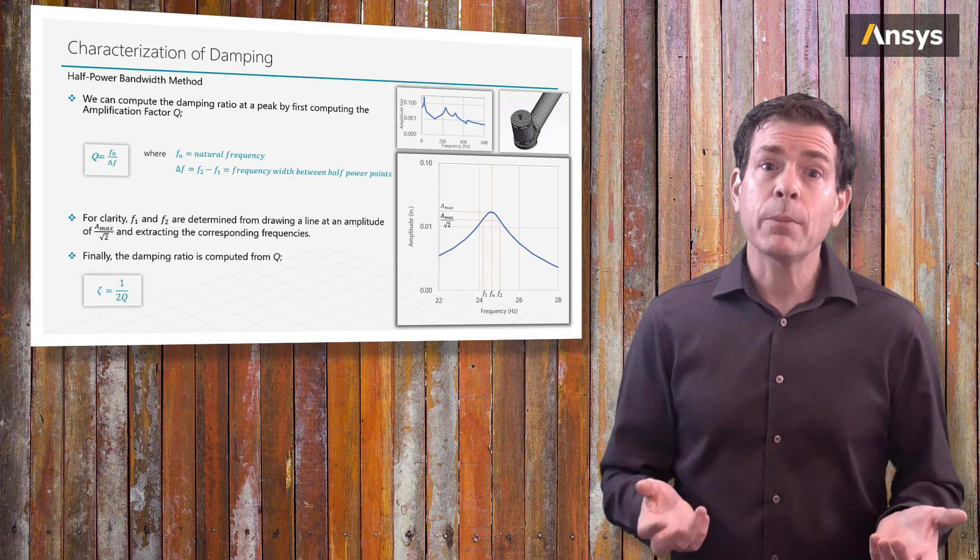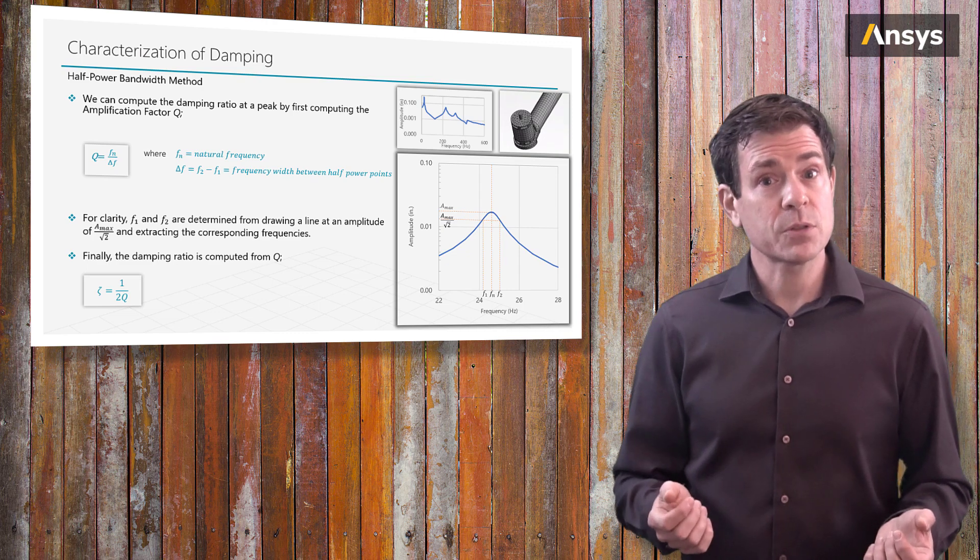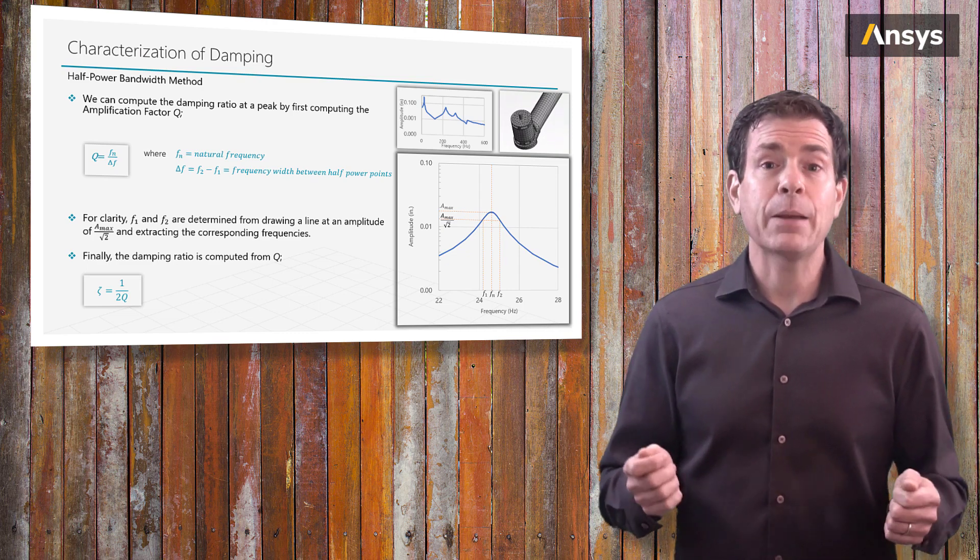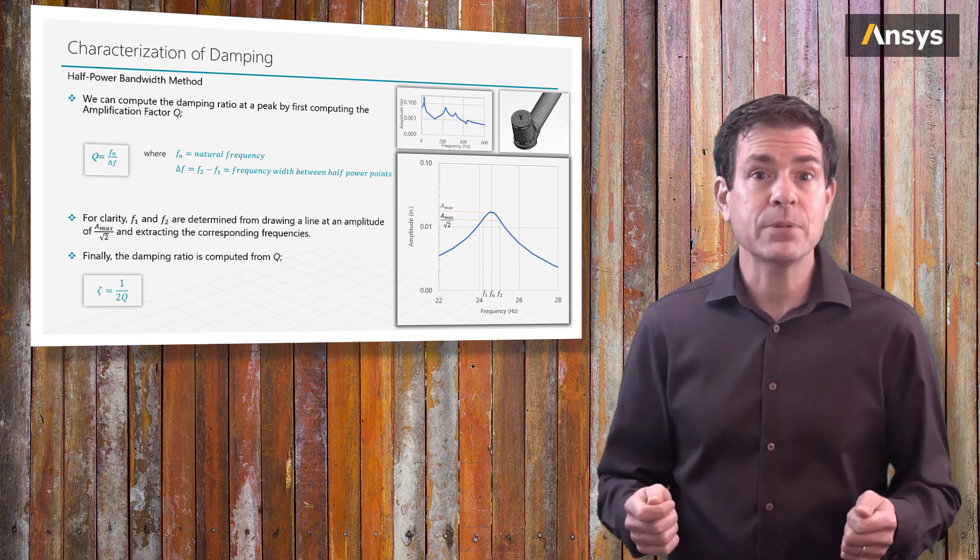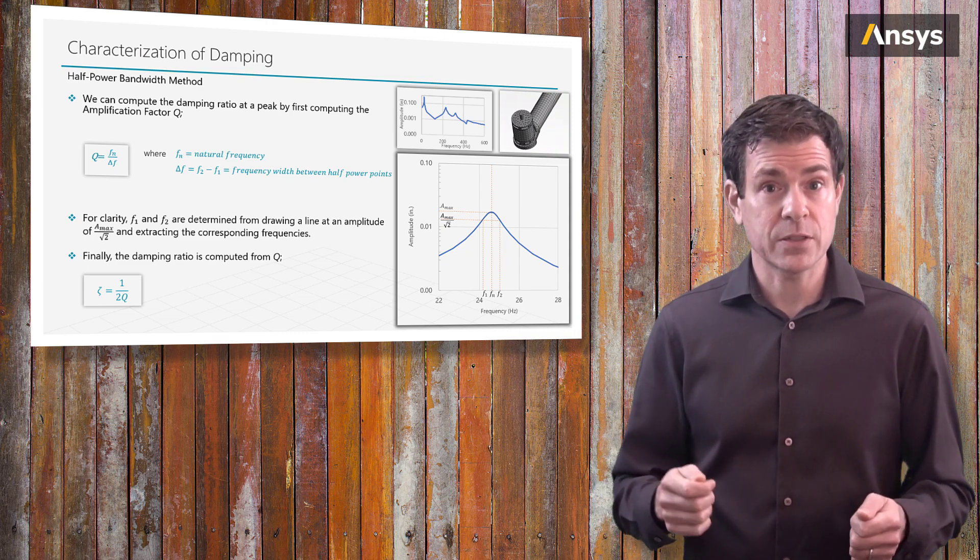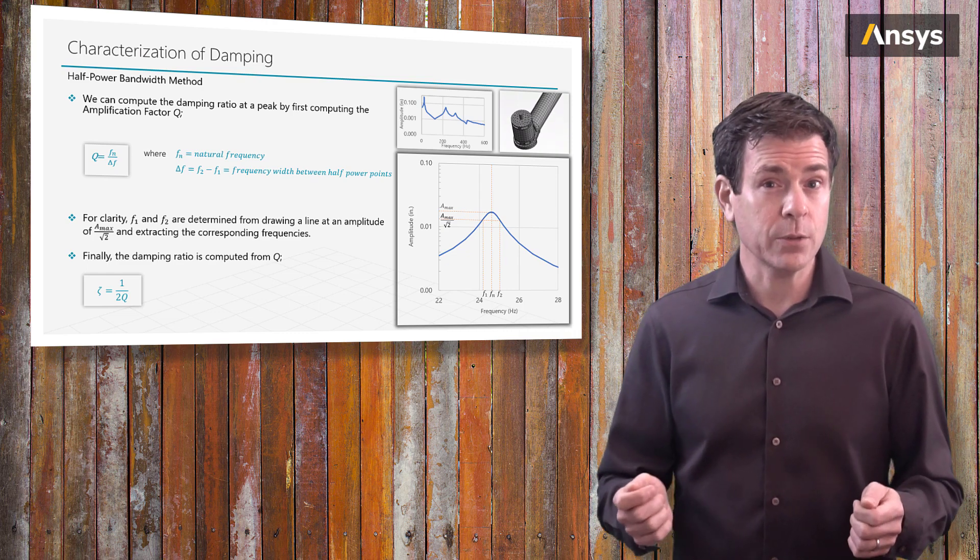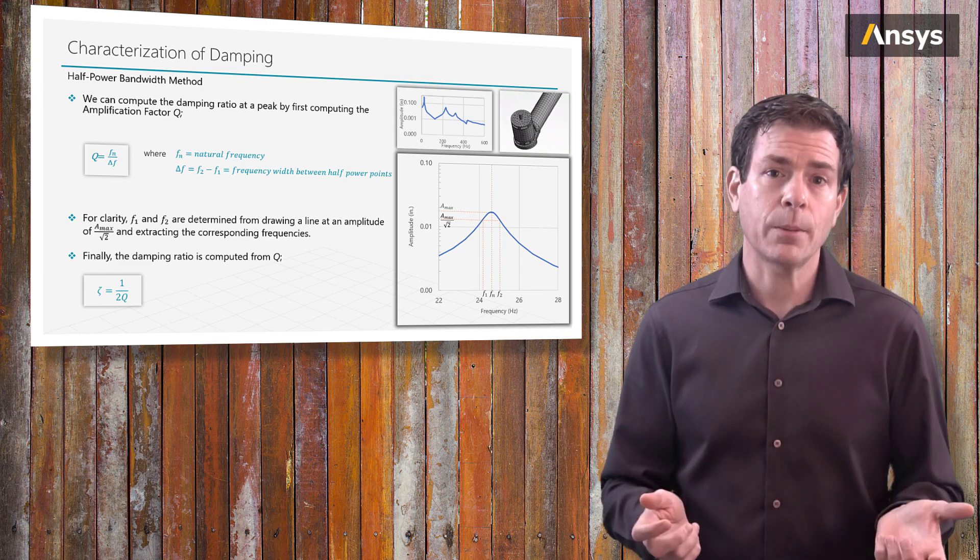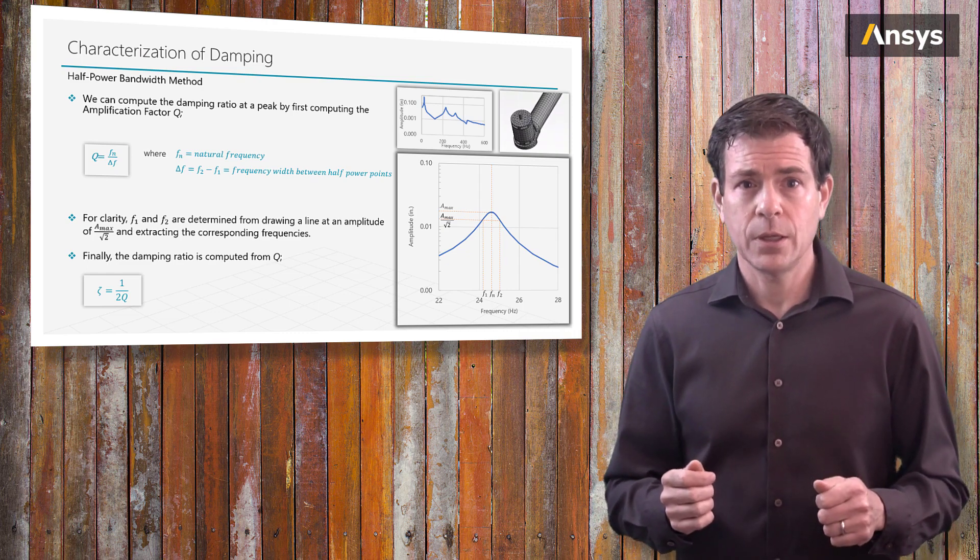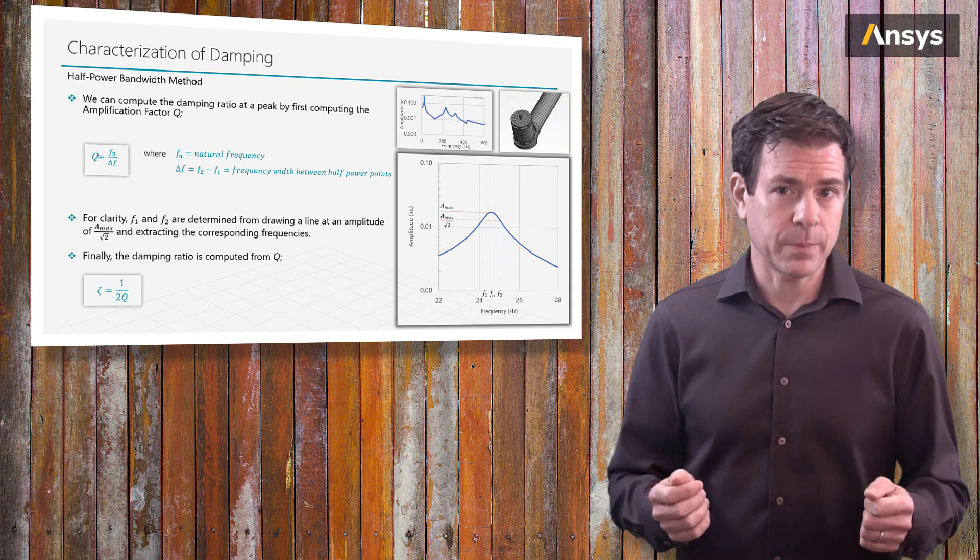This can be repeated at the other peaks in the frequency response curve. By the way, what is the experimental method to generate the frequency response plot? Typically, the hammer impact test where the part is tapped and the acceleration response is measured via accelerometers, or via shaker table that vibrates the structure over a specified frequency range, and again accelerometers measure the response. We won't get into the details of these experimental methods.